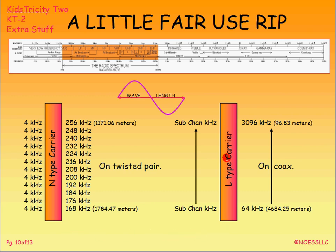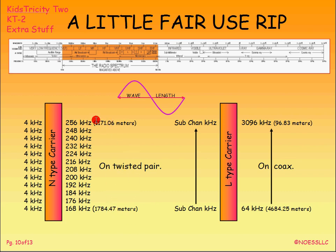Let's move over to the L-type carrier system. I bring in sub-channels made up of a whole bunch grouped together, then modulate them into a frequency somewhere between 64 kHz and 3,096 kHz. I've also shown what the length of the wave would be if you could measure it in meters with a yardstick — how physically long one cycle would be. You'll notice the lower frequency has a much longer wavelength.